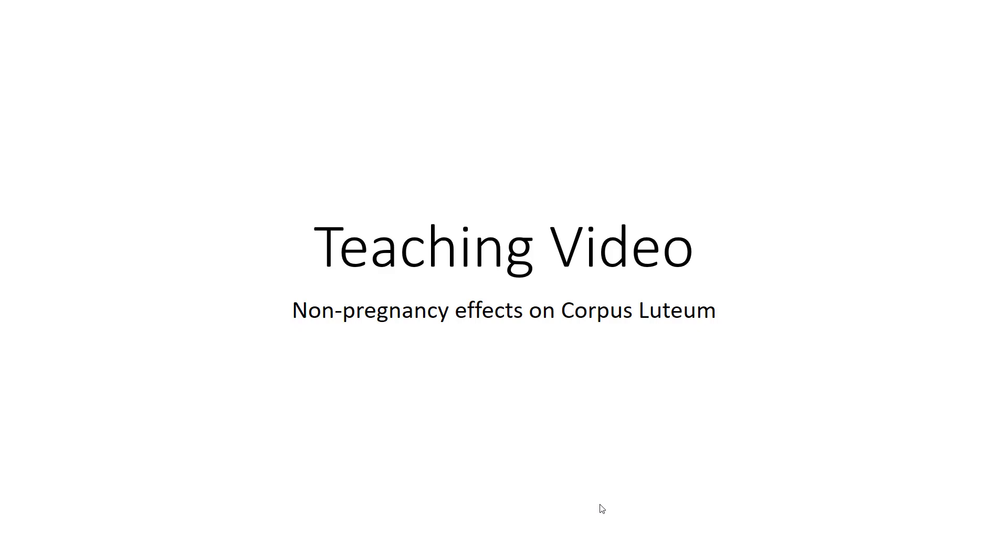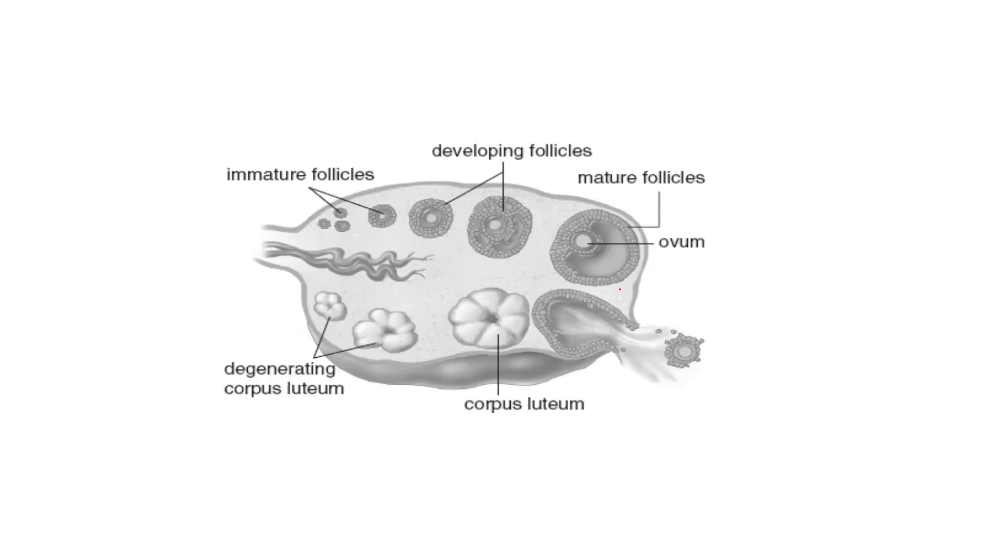Probably the best way to demonstrate some of the concepts here is just to take a look at this diagram that you have. This is on your page 19, and it's a typical picture of an ovary that looks at the different stages of development.